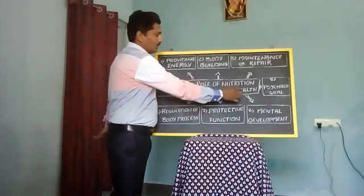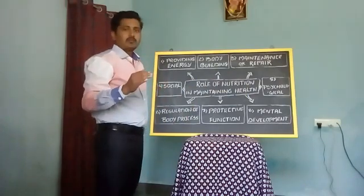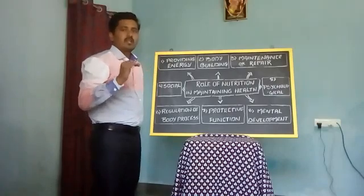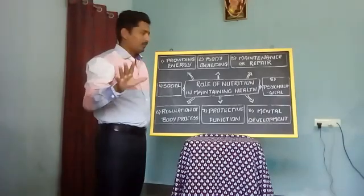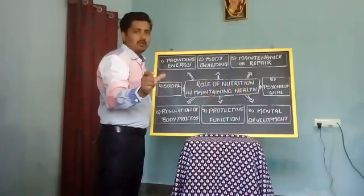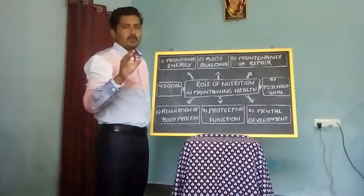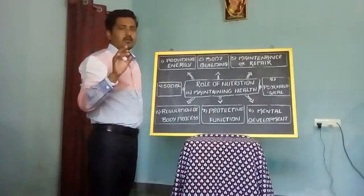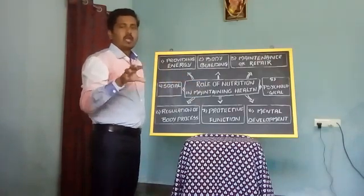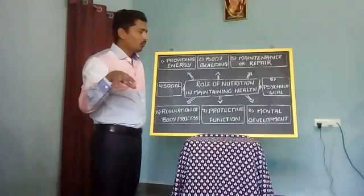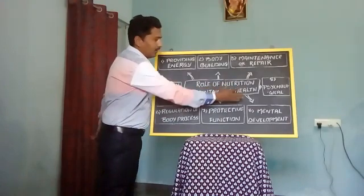Here two points we will focus on: first one is nutrition, which we are well aware of from its definition. The second point is health. Health means it is a complete state of physical, mental, and social well-being, and not merely the absence of any disease. Health covers three areas: physical, social, and mental. Nutrition helps in maintaining all three areas of health.